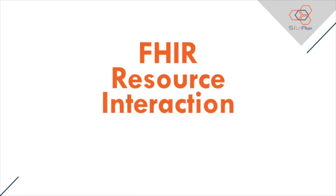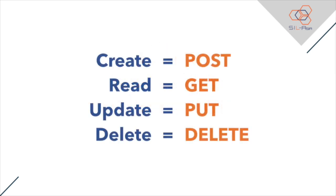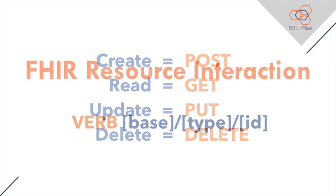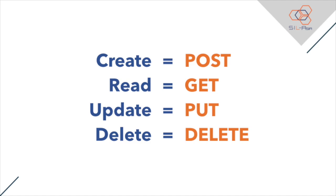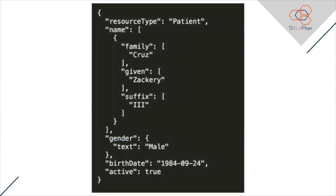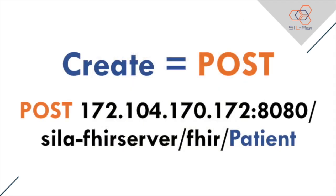FHIR already provides a REST API with a rich but simple set of interactions. In this session we will look at the first four operations for manipulating resources — the CRUD operations. The interactions are defined as: verb space base slash type slash ID. The first operation is create, with verb POST. For example, to create a resource instance for a patient, we send an HTTP POST request to the resource type's respective endpoint.